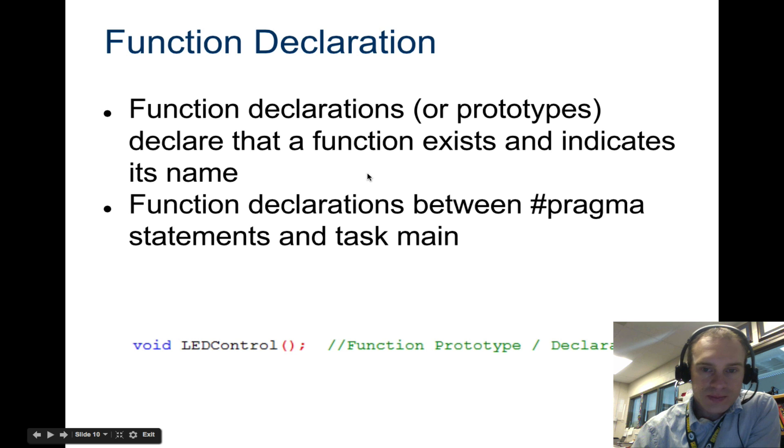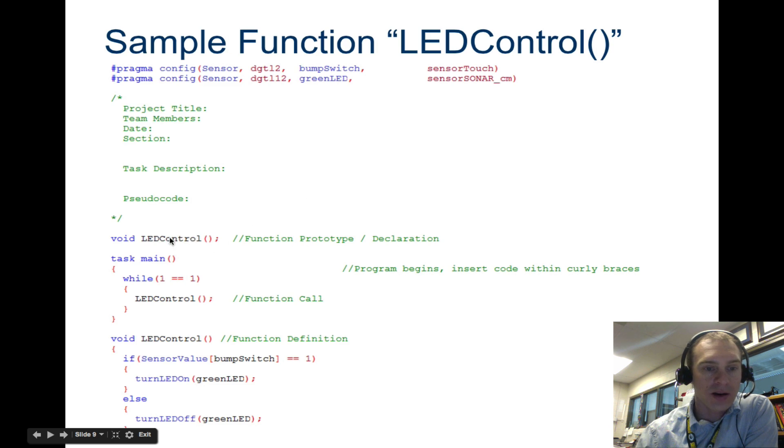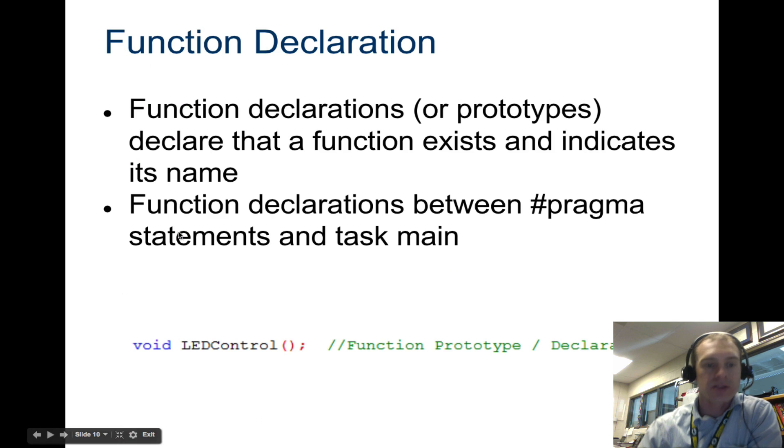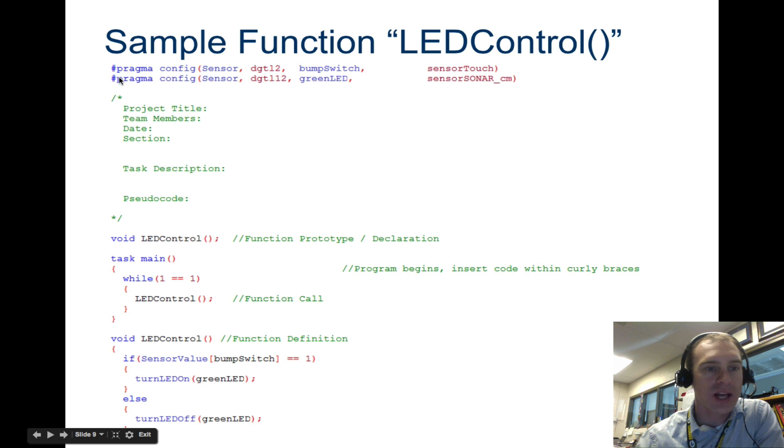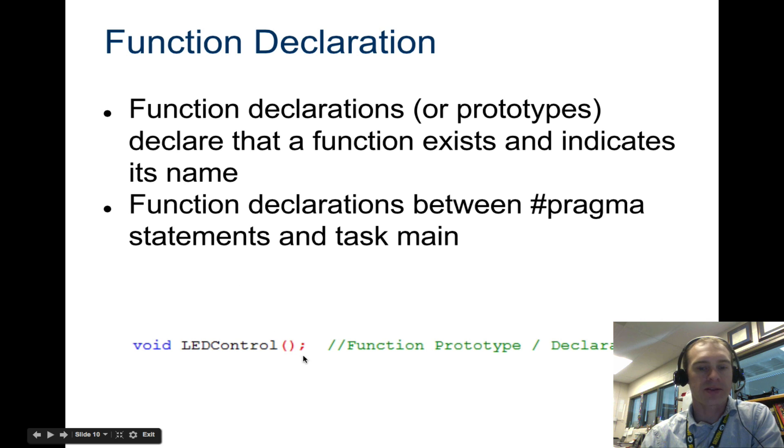Function declarations, which is what we have right here, this thing. Function declarations declare a function exists and indicates its name. And the declaration has to occur between the hashtag pragma statement and the task main. And you see, here's the hashtag pragma up here. That's the thing that configures all of your switches. And between task main, you can see the function is declared right in here. And so that's what it looks like.